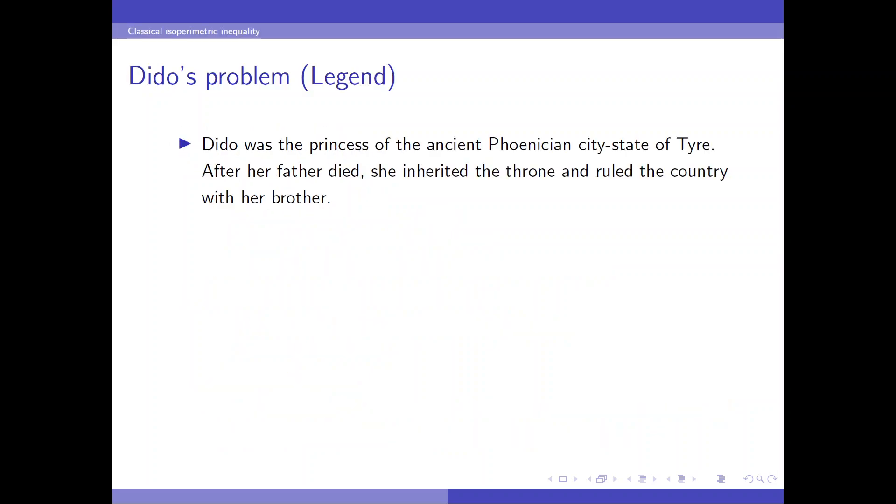Let's start. The classical isoperimetric problem is due to the legend of Dido. Dido was the princess of the ancient Phoenician city-state of Tyre. After her father died, she inherited the throne and ruled the country with her elder brother.